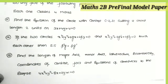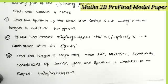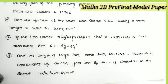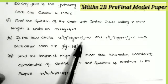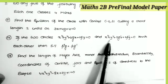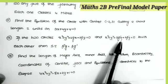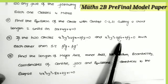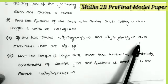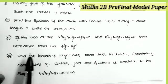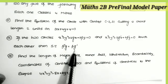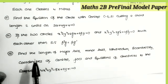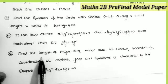The second question is from the topic system of circles: if the two circles x² + y² + 2gx + 2fy = 0 and x² + y² + 2g'x + 2f'y = 0 touch each other, then show that f'·g = f·g'.